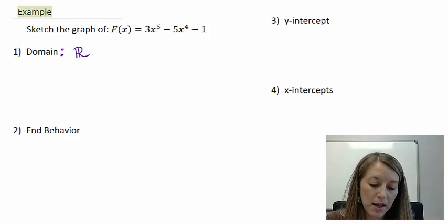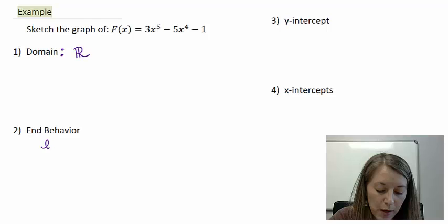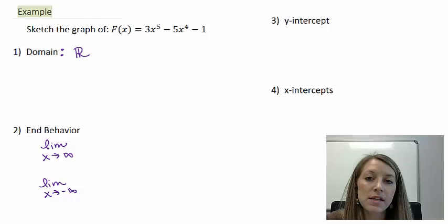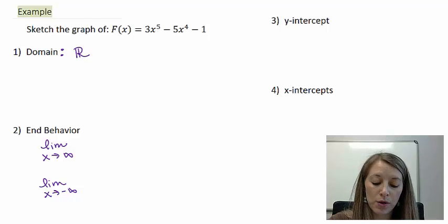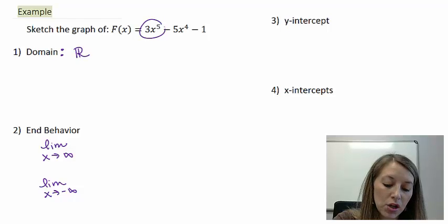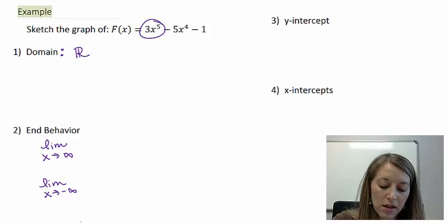Next, we do the end behavior, and we do this by looking at the limits as x is approaching both positive infinity and as x is approaching negative infinity. Since this is a polynomial function, we do this by looking at the leading term test. My leading term is 3x^5. It is positive odd.